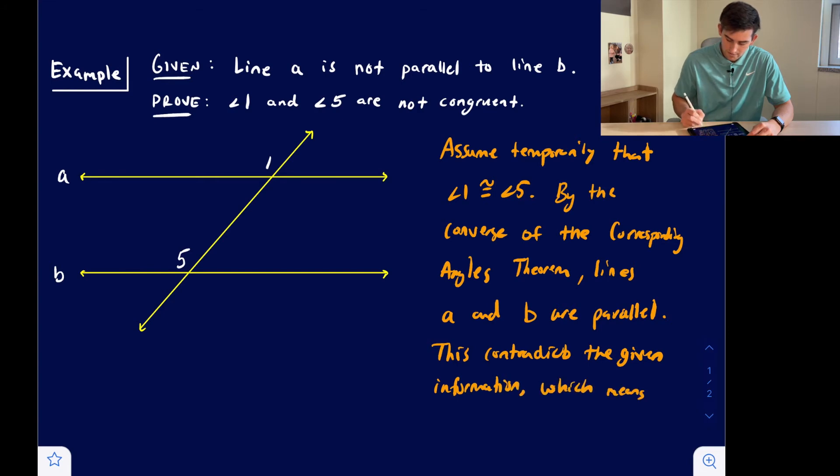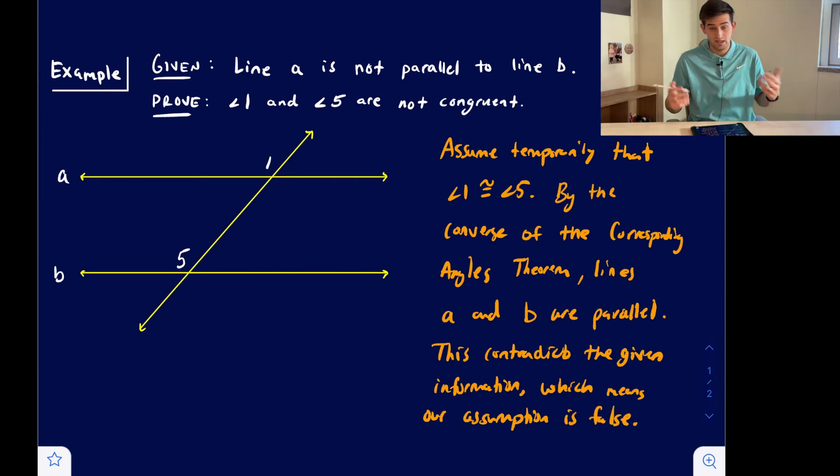So now we're going to write, okay, so angle 1 and angle 5 can't be congruent because if they're congruent, then the lines are parallel and that contradicts our given information.